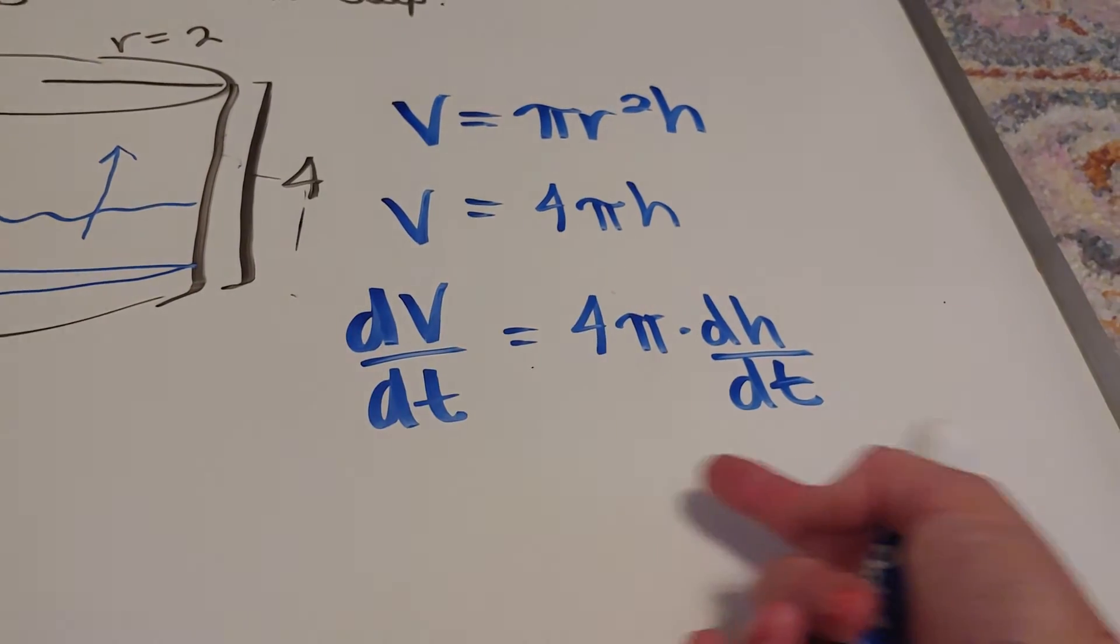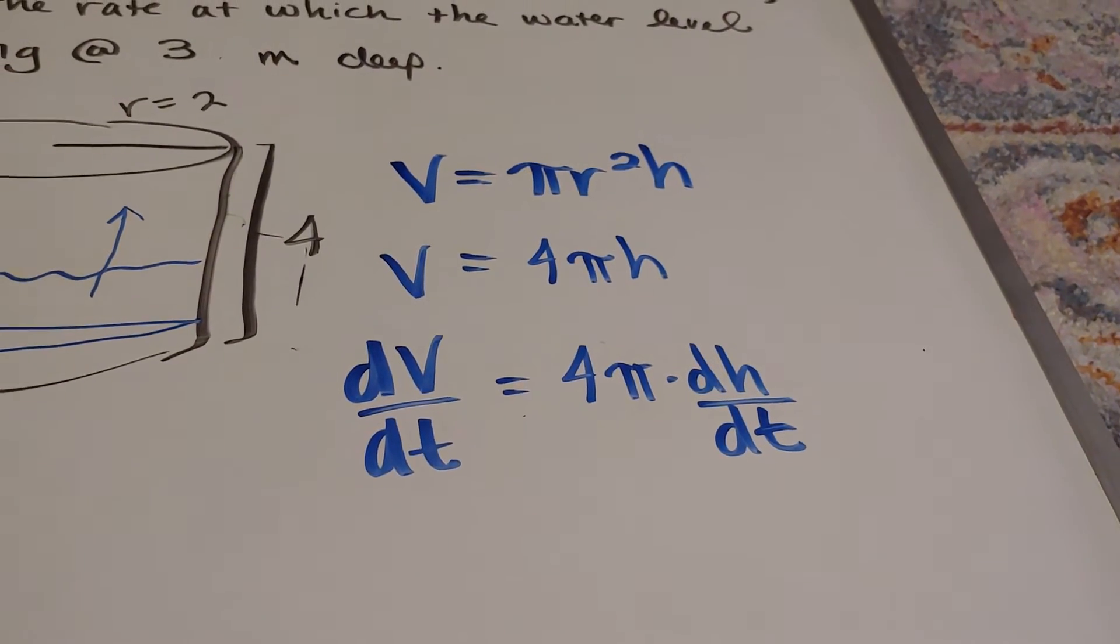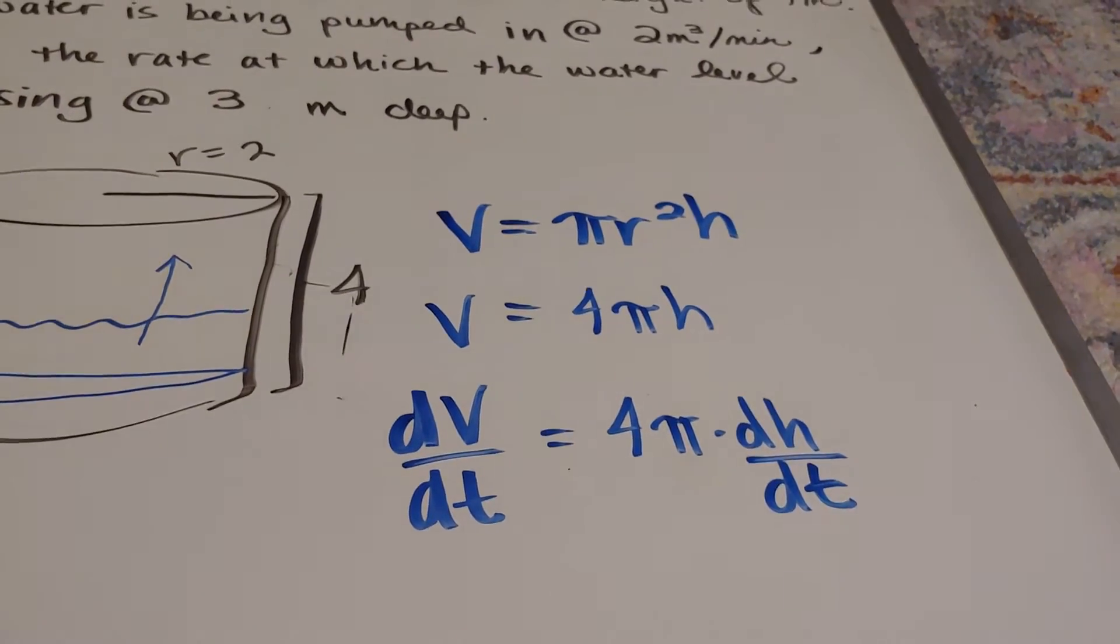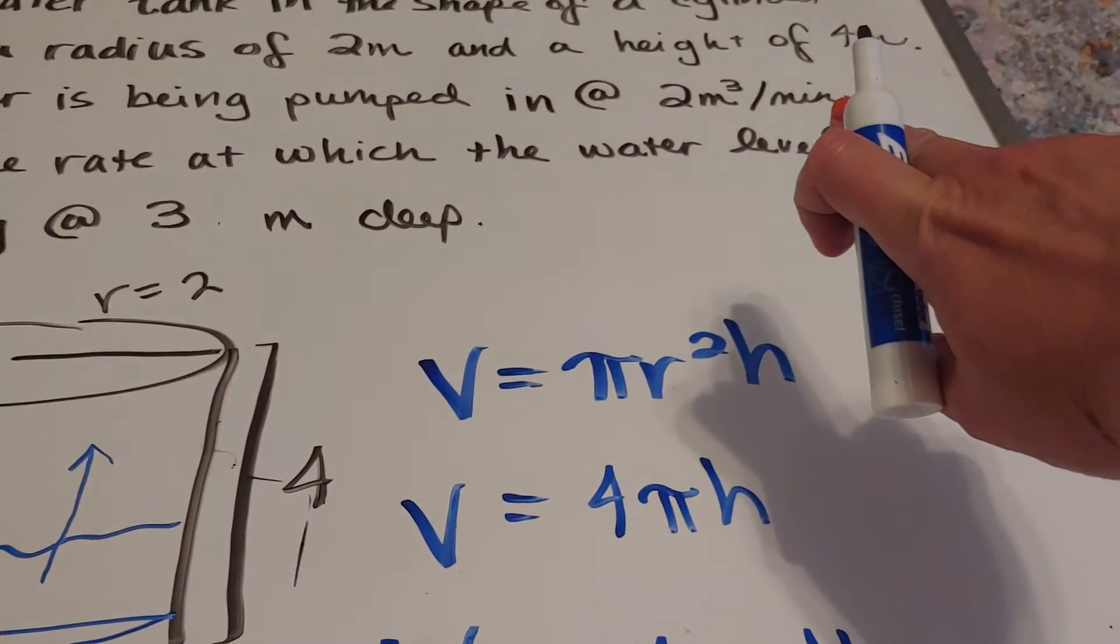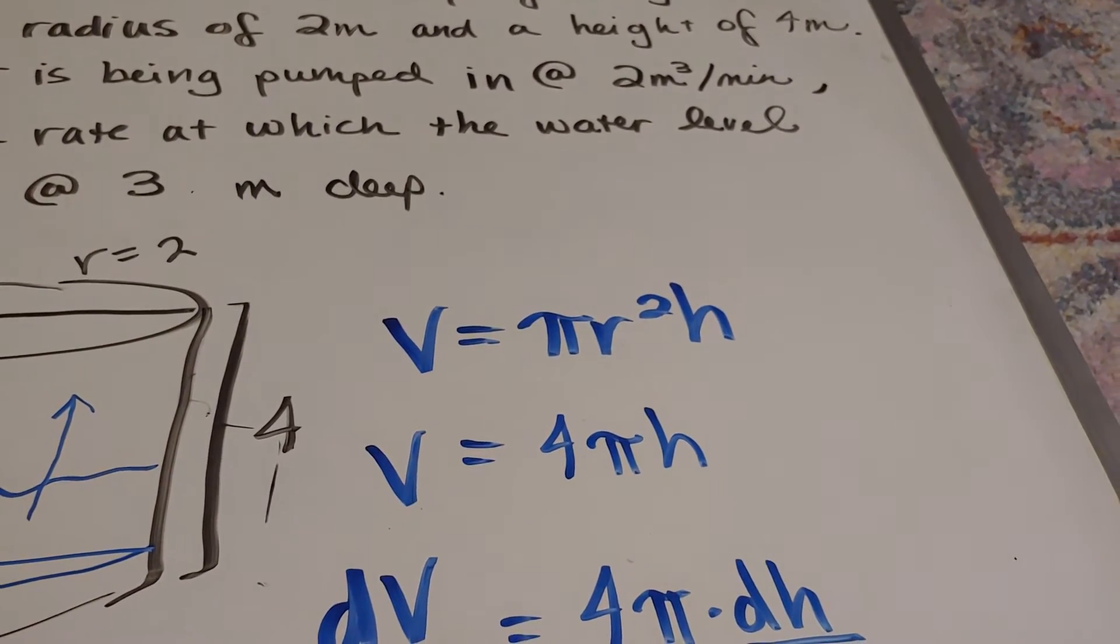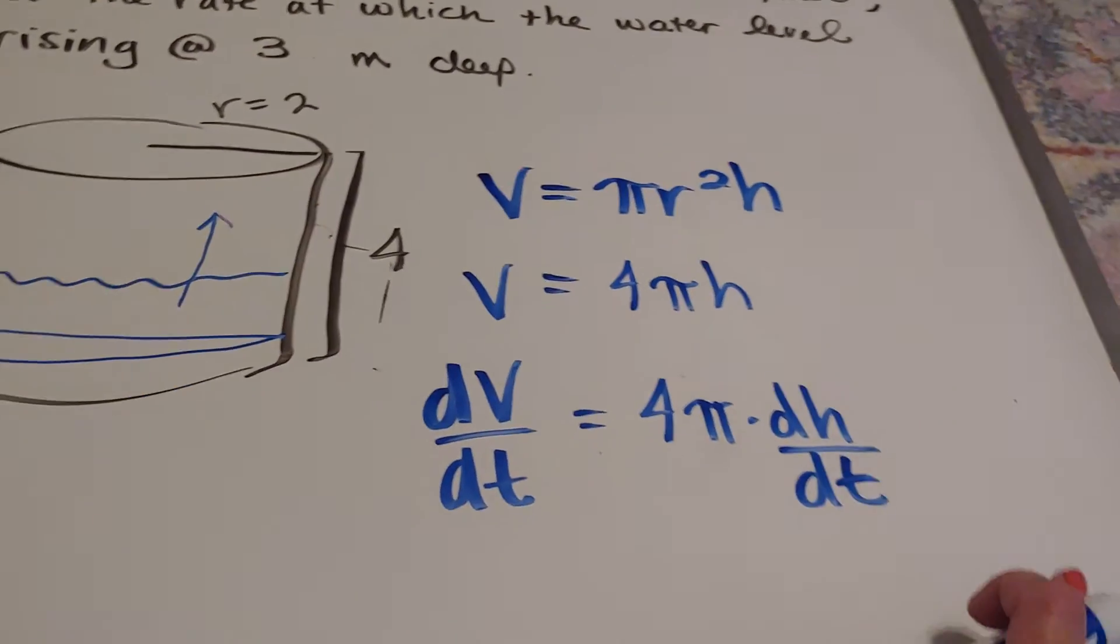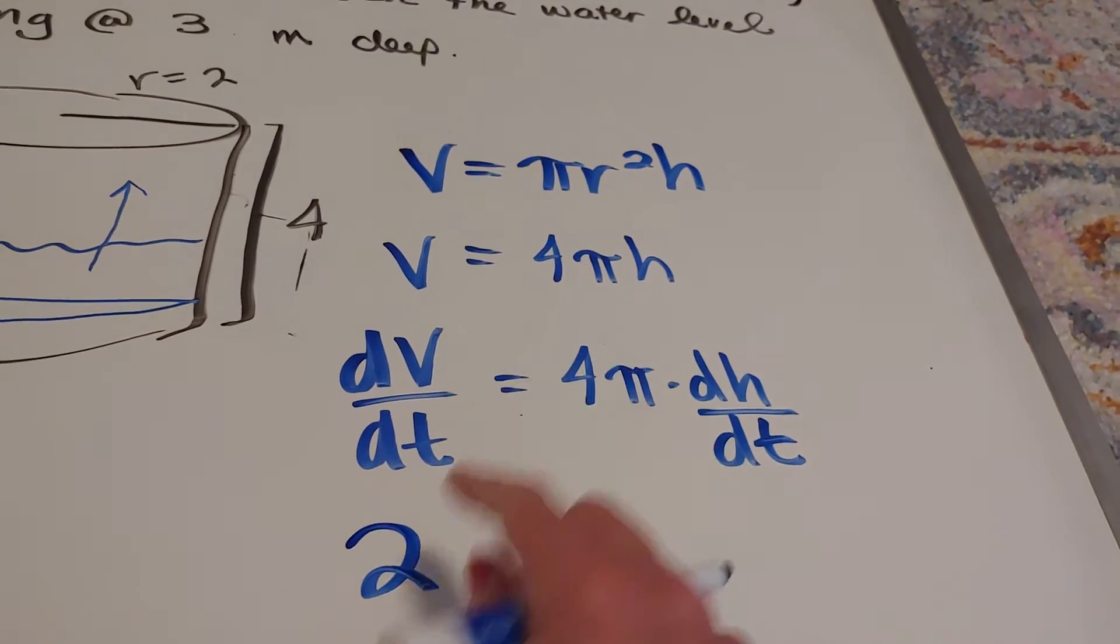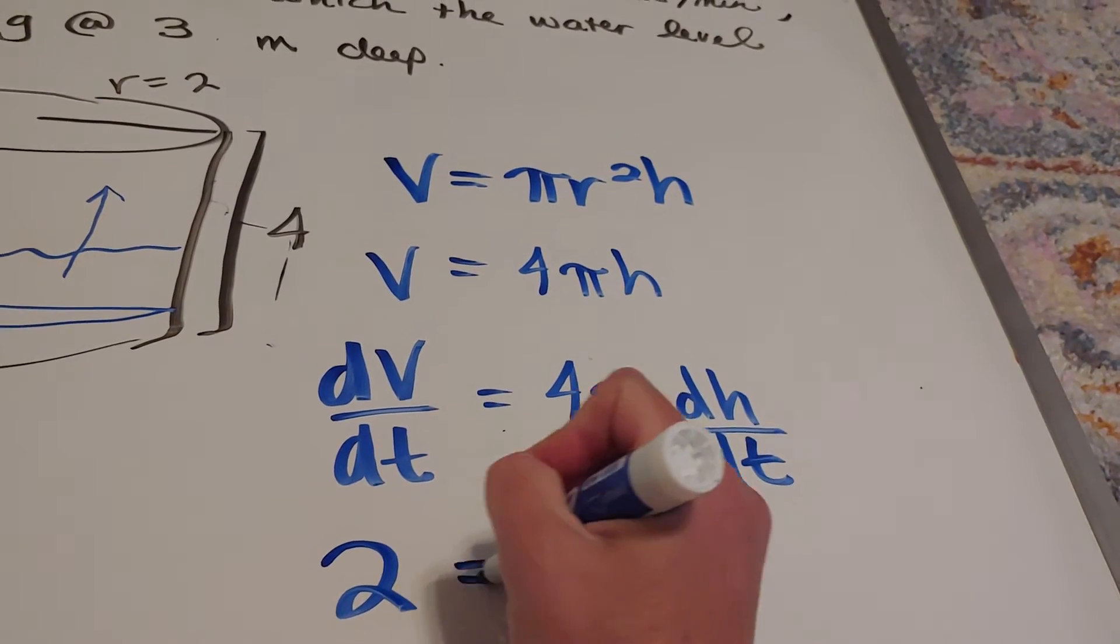Okay, so this is our equation that I'm going to plug in. It gave me something, and if you look up at the top, you can see at the very top up there. It says that it's coming in, the water's coming in at 2 cubic meters per minute. So cubic meters per minute is how the volume is changing. So this is changing at 2 cubic meters per minute.